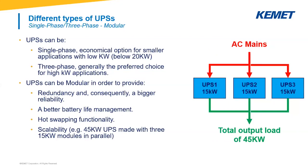We can see on the market different types of UPSs. We can divide them into two big classes: single-phase or three-phase. Single-phase is the most economical option for smaller applications — below 20 kilowatt in general. Three-phase UPS is generally the preferred choice for high-kilowatt applications. Another big trend we see in recent years is the modularity of these devices.